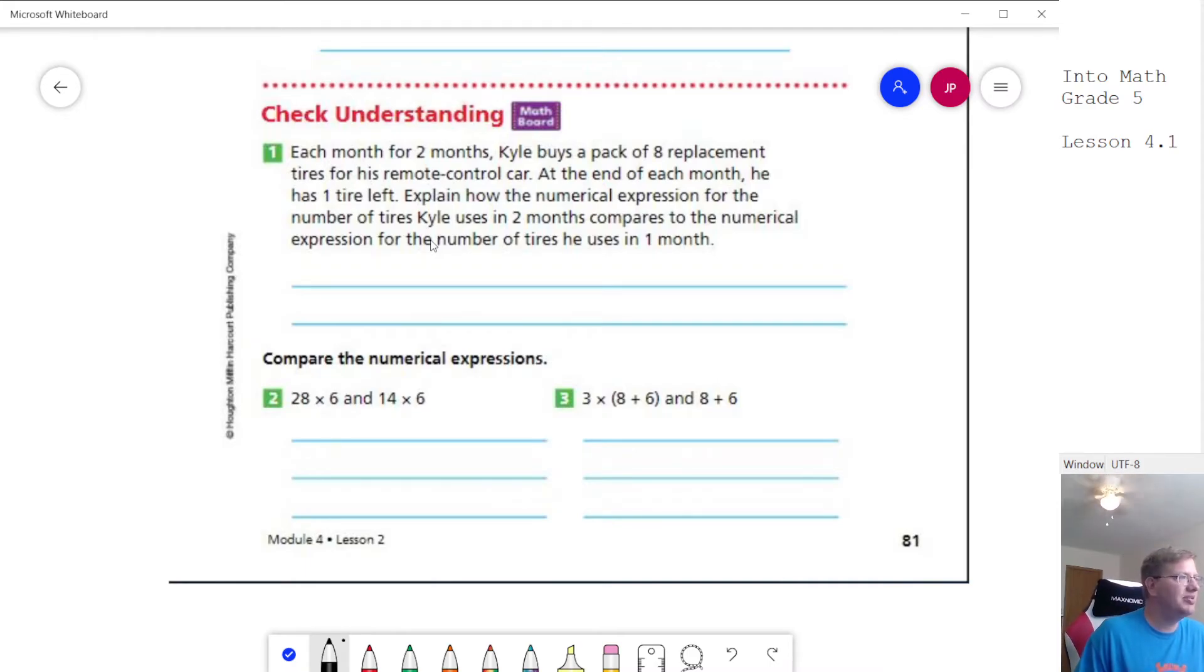What we would end up doing is saying that we're buying eight tires each month, and we're going to end up with one leftover. So we could do 8 minus 1, and that could be the amount of tires that we use for each month. So for one month, we could say we're doing 1 times (8 minus 1). For two months, we could say we are doing 2 times that amount. So how does the number compare? It would be twice as many.